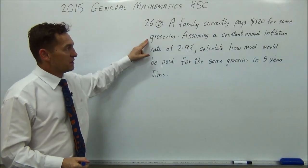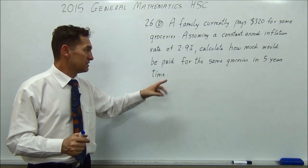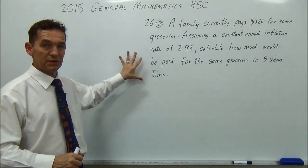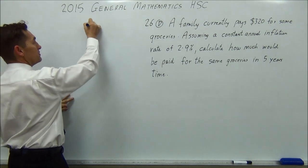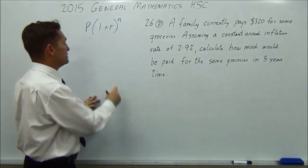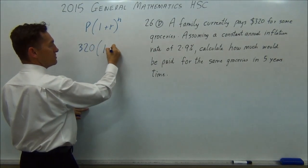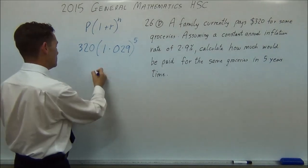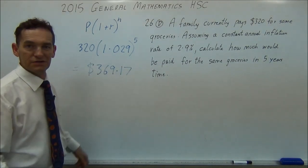26F. A family currently pays $320 for some groceries. Assuming a constant rate of inflation of 2.9%, calculate how much will be paid for the same groceries in five years' time. It's a very simple question. All you're doing is applying a compound interest rate. This is your compound interest rate, and that's your money. So you're just applying this formula. Okay? Because it's constantly going up by that rate. So 1 plus R is 1 plus 2.9%. So you're just going to press 320 multiplied by 1.029 to the power of 5. Yep. Press that in your calculator, and you get $369.17. And you're done. Thank you so much.